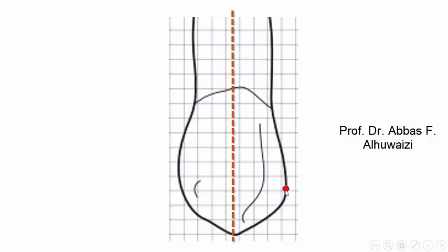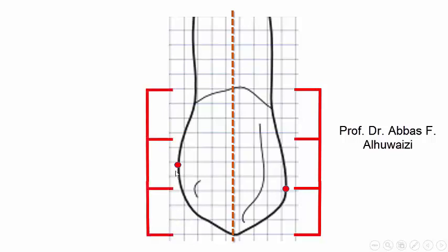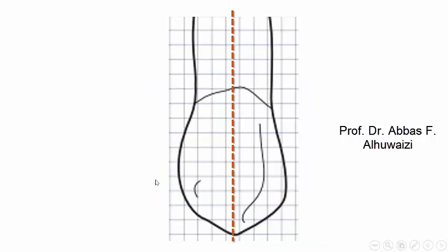The peak of curvature mesially is located between the incisal and the middle third of the crown, while the distal peak of curvature is located in the middle of the middle third of the crown. The mesial slope is shorter than the distal slope.